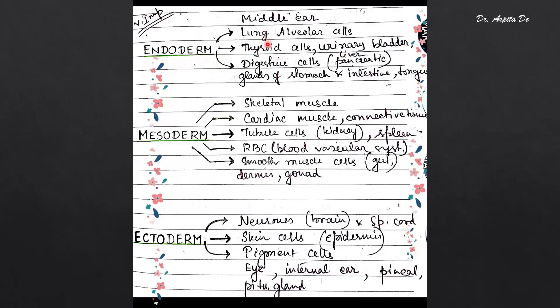Endoderm gives rise to middle ear, lung alveolar cells, thyroid cells, digestive cells, glands of the stomach, intestine, and tongue. Mesoderm gives rise to skeletal muscle cells, cardiac muscles, and smooth muscles. I'm not discussing these in detail as this is not our main topic. We need to know about the ectoderm neurons. I've given this picture just to help you recall these three germ layers and their respective functions.